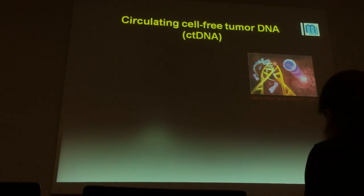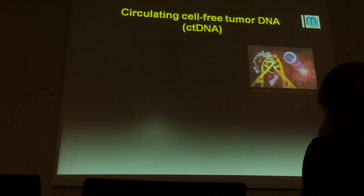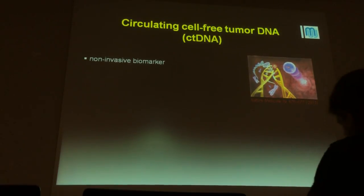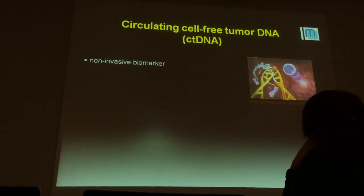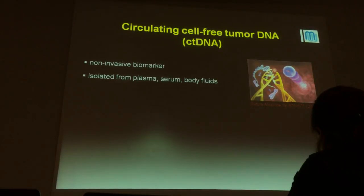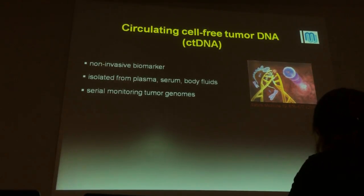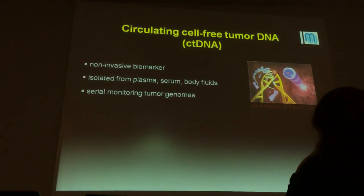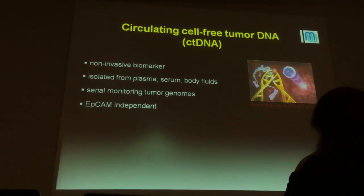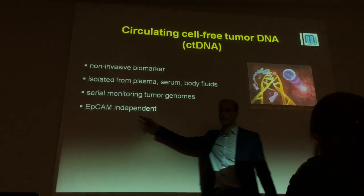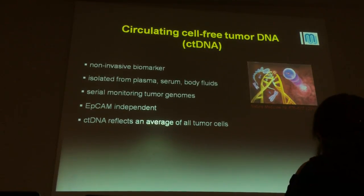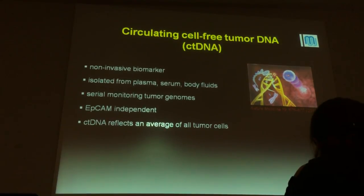Circulating cell-free tumor DNA is a very hot topic. The technique works but needs to be translated into clinical practice. It is a non-invasive biomarker — just drawing blood, which we do every two weeks anyway, just take an extra tube. It can be isolated from plasma, serum, or any body fluid including urine. It allows serial monitoring of the tumor genome, which is unstable. It is EPCAM-independent — unlike circulating tumor cells, this is cell-free DNA — and it reflects the average of the tumor genome, not just one clone. We already use nucleic acid monitoring for chronic viral diseases like HIV and hepatitis C, monitoring viral RNA load. The same can now be done for tumor DNA.